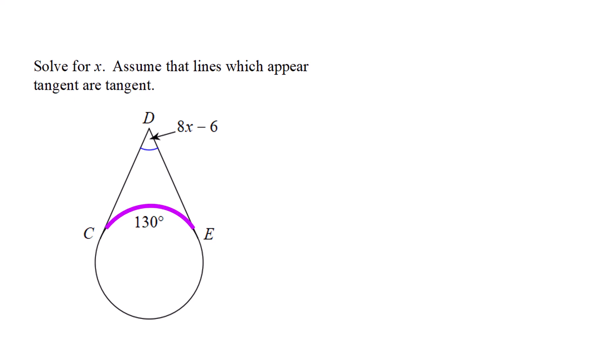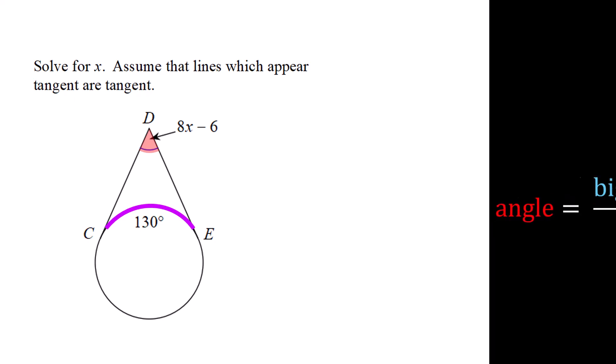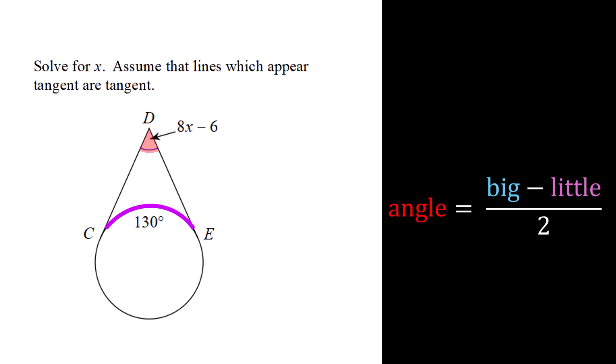I have an arc on the circle and they want me to find this angle. Specifically, they want me to find the x, but it's part of that angle up there. Go back in your notes and look. There's going to be a formula that says that angle can be calculated if you take the big arc minus the little arc and divide by two.